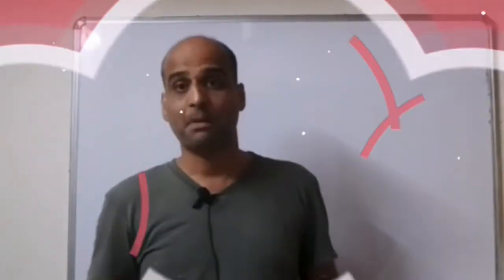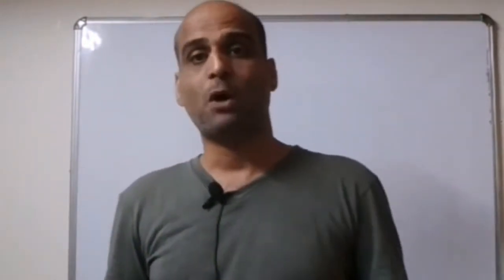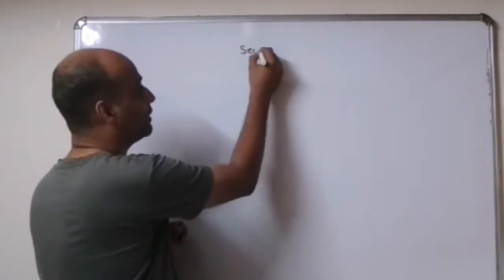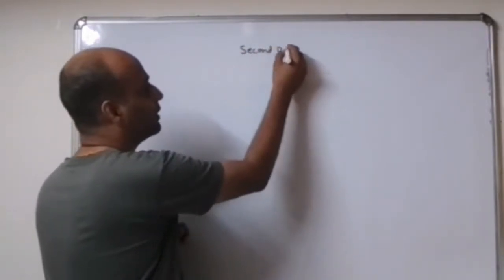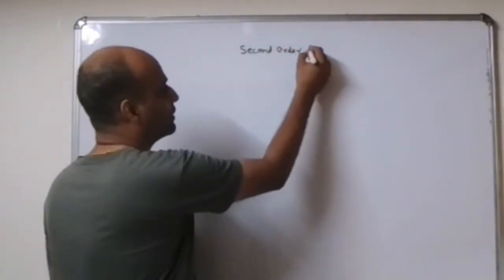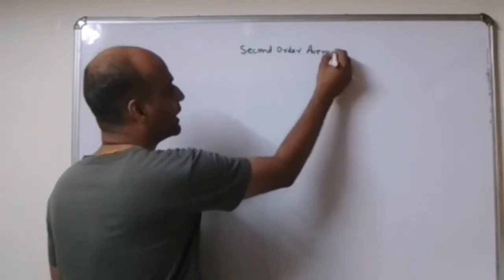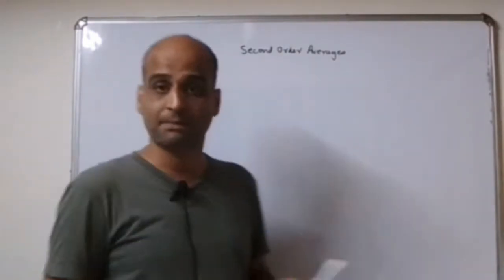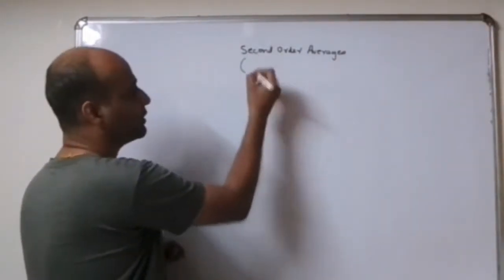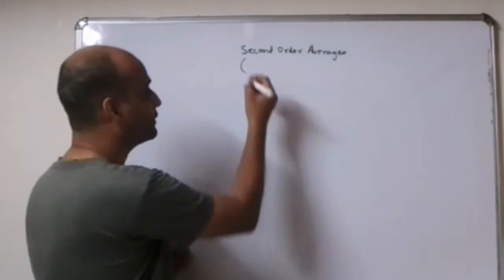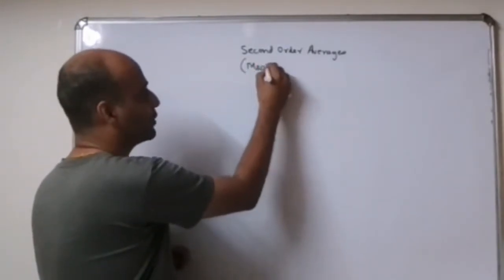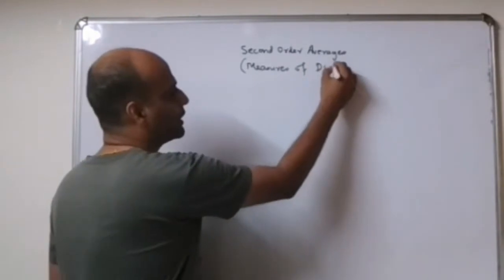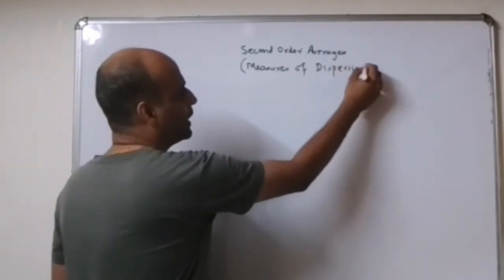Now let's talk about averages of the second order. So we are going to talk about the second order averages. Now these second order averages are nothing but the measures of dispersion. So I will just introduce you to the measures of dispersion.